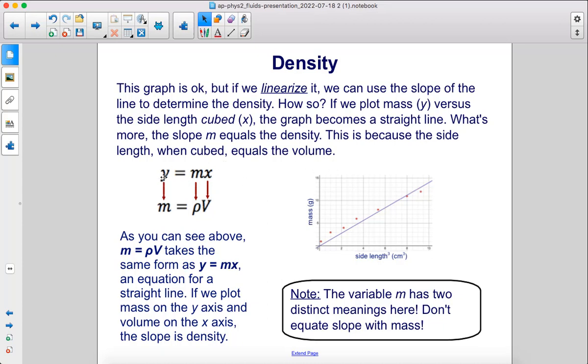Here, the equation for a line is y equals mx plus b, but we're not going to have a plus b here because we're starting at the origin. The equation for mass is mass equals density times volume. On the y-axis, we have mass. On the x-axis, we have volume, and you can see the slope of the line would be equal to density.